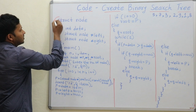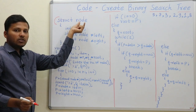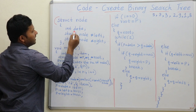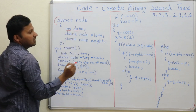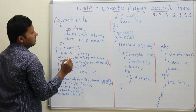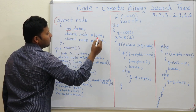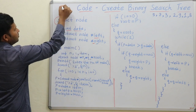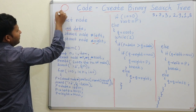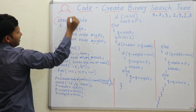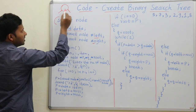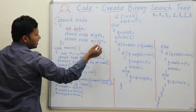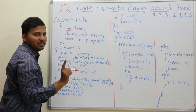We are using a structure whose name is node, and inside that structure the variable data of data type integer is declared. Then there are two pointers: one is left pointer and right pointer. So as you know, for a node there is a left child and right child, so for the two children there are two pointers, that is left pointer and right pointer.